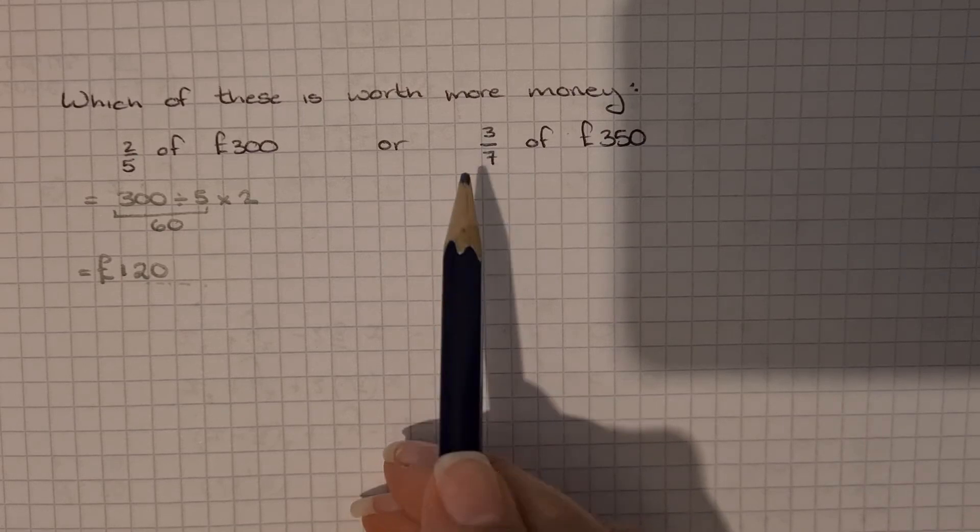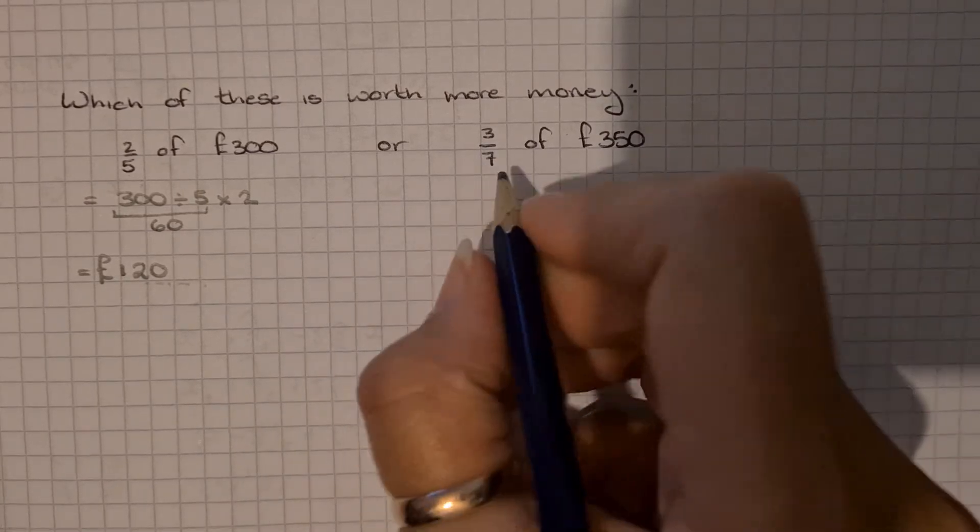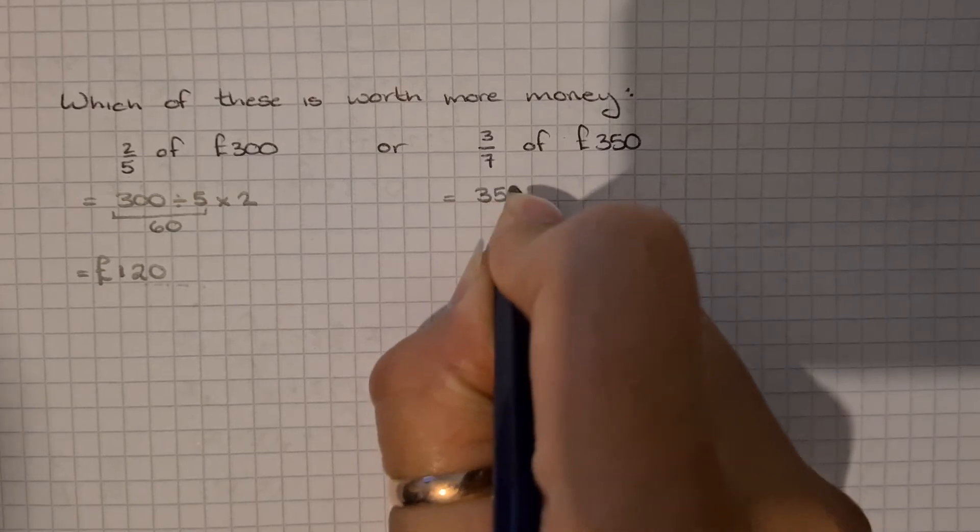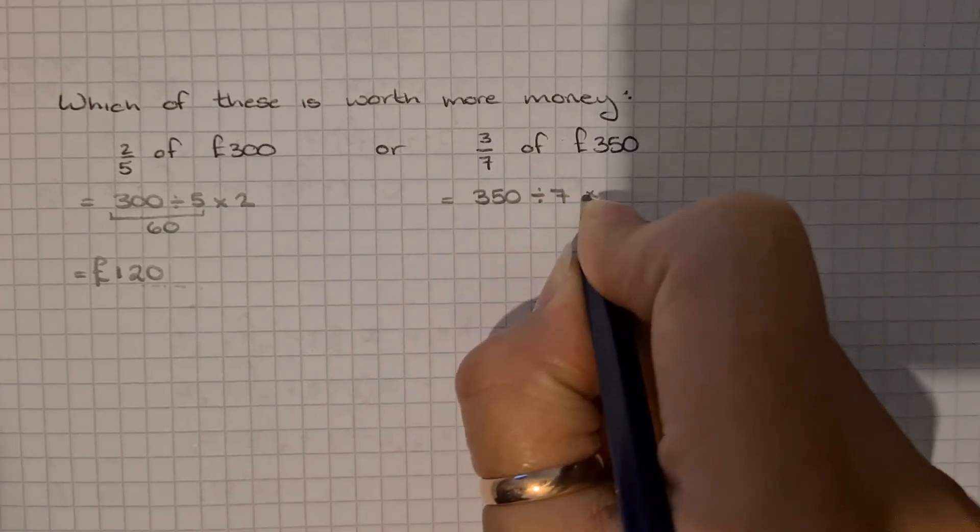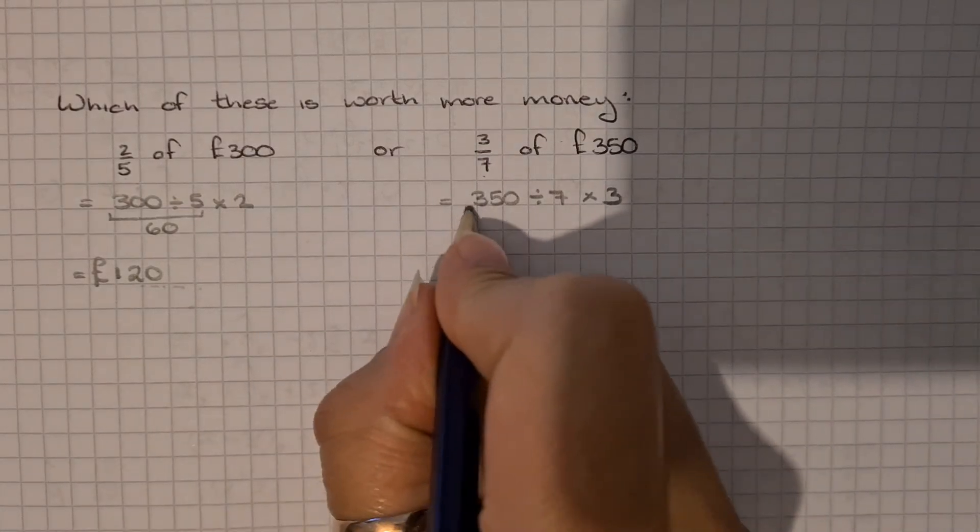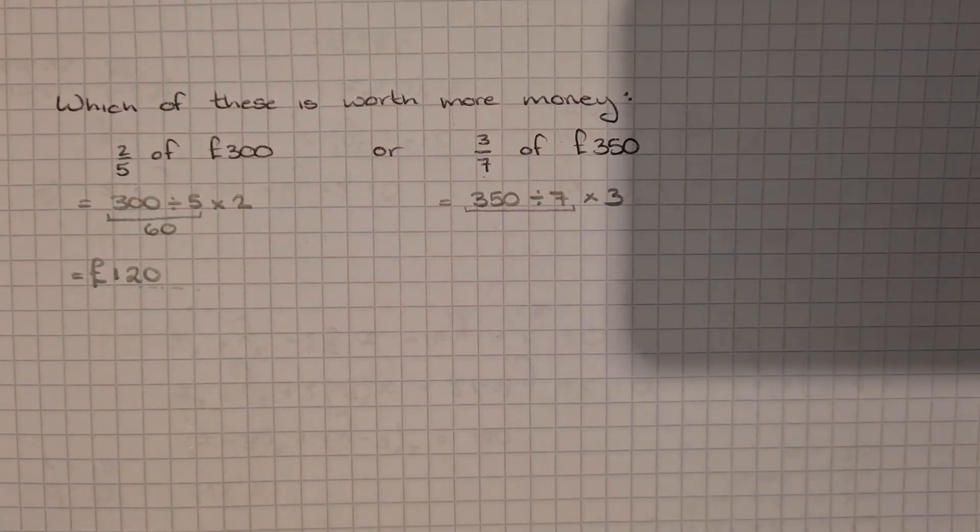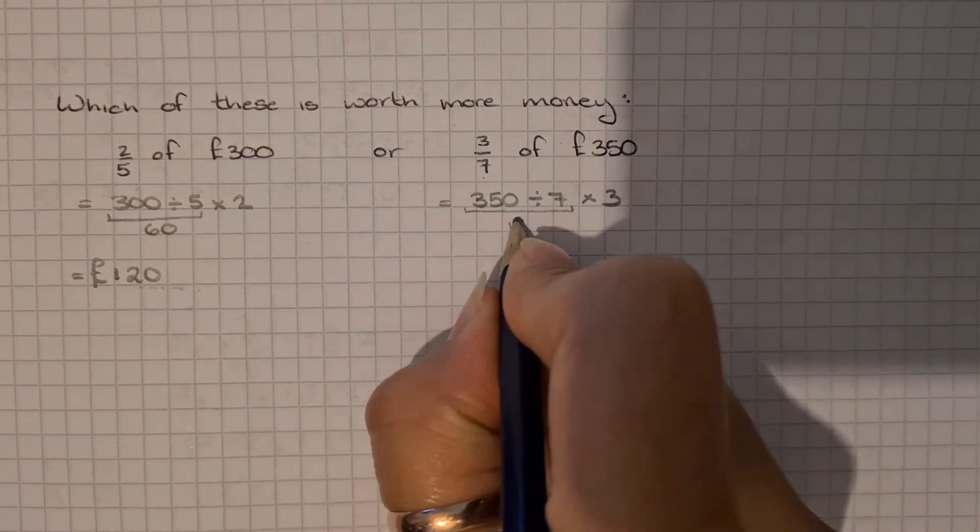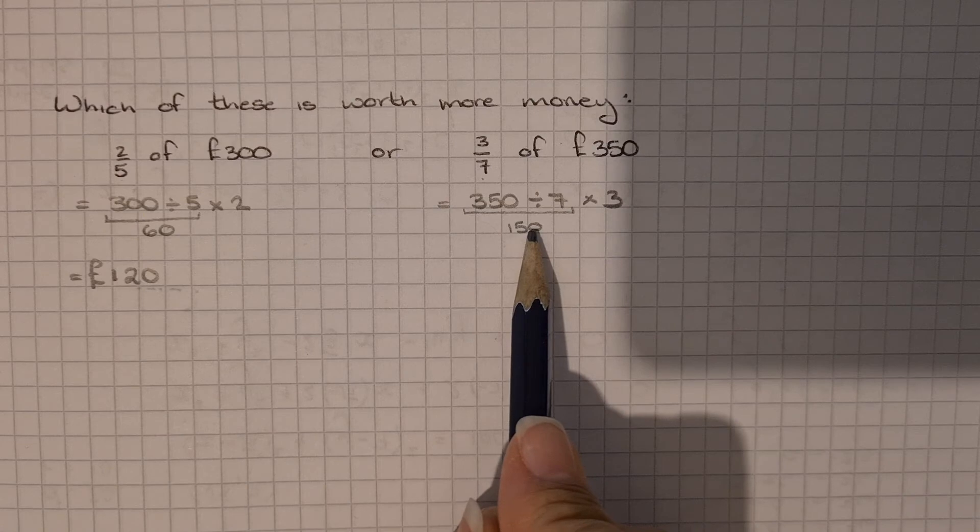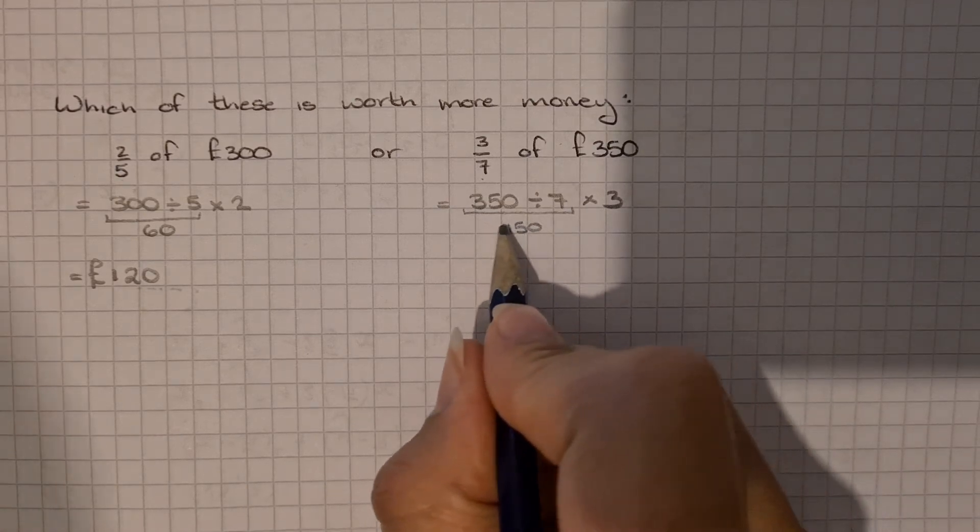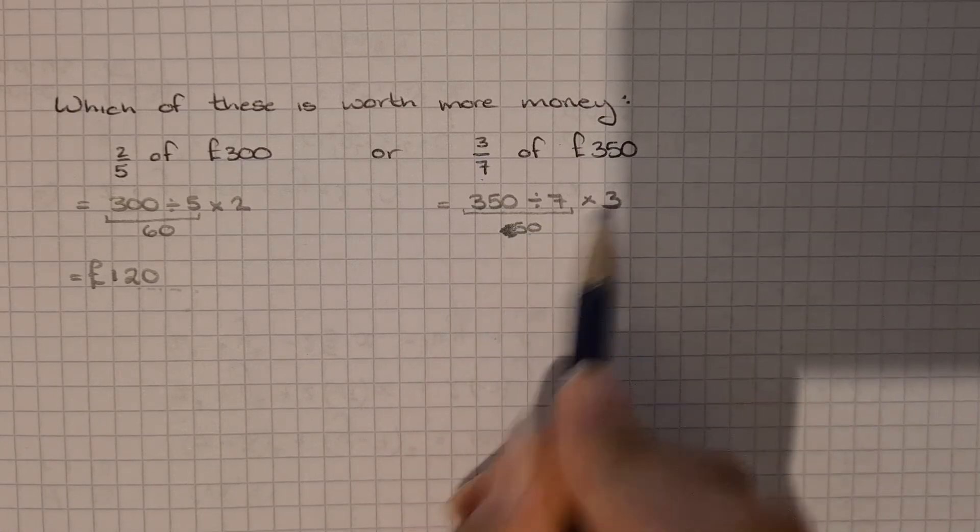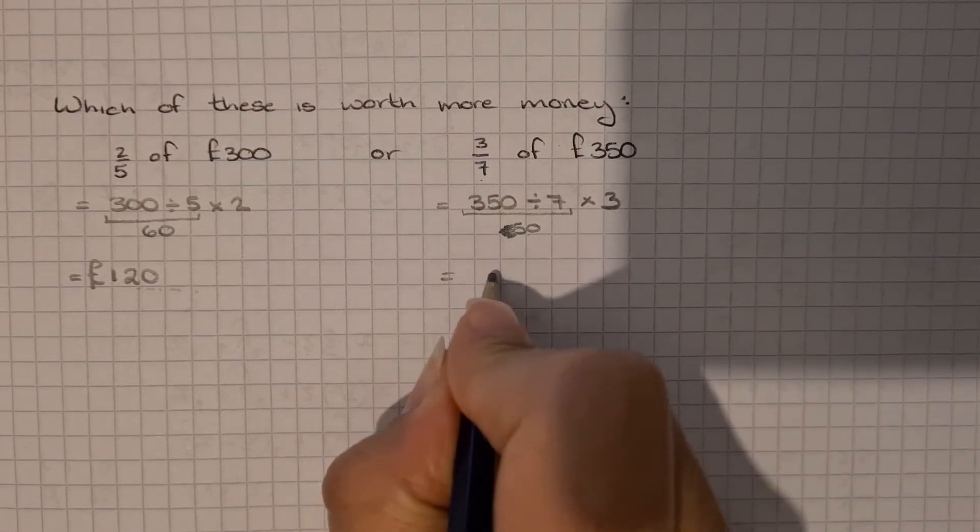Now for the other one. 3 sevenths of 350. So we're going to be doing 350 divided by 7 times by 3. Divide by the bottom times by the top. 350 divided by 7 is... oh no it's not. Ignore me. It's 50. And then we need to do 50 times 3 which is 150. Sorry I skipped forward to the answer.